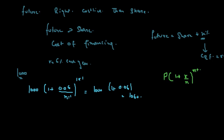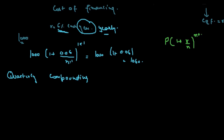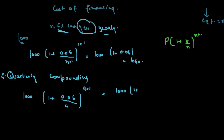Now an investor might say that this 6% financing is yearly, and he would prefer more frequent compounding. He could ask for quarterly compounding. The formula then changes to 1000 × (1 + 0.06/4)^(4×1), which equals 1000 × (1 + 0.015)^4.